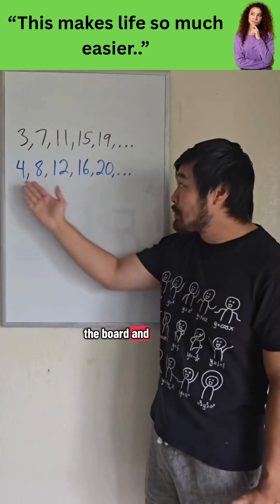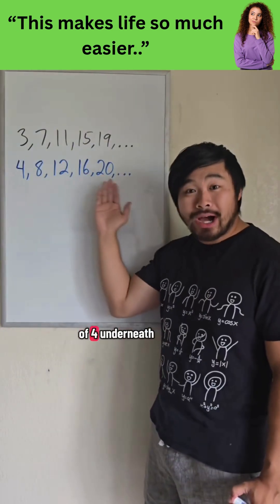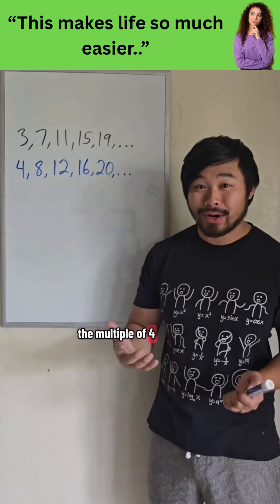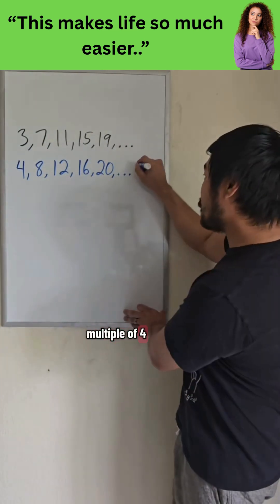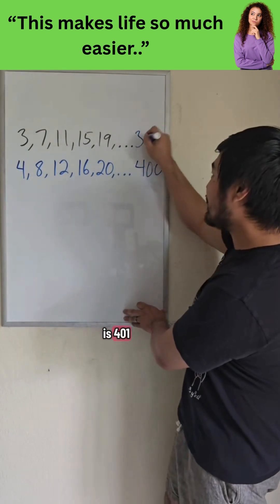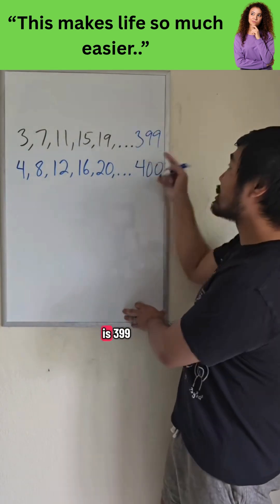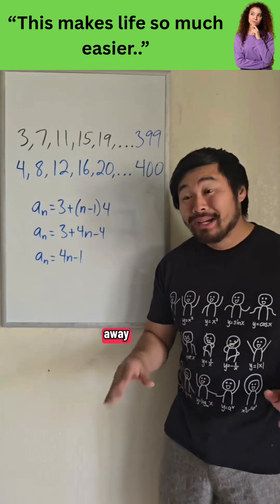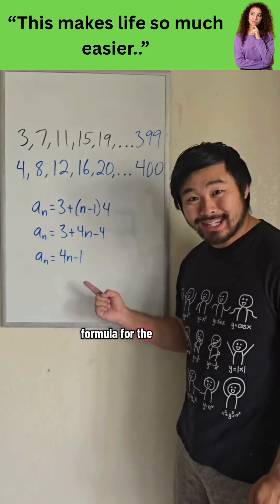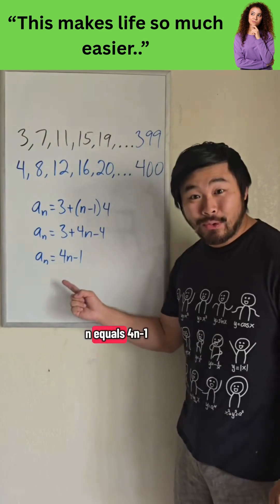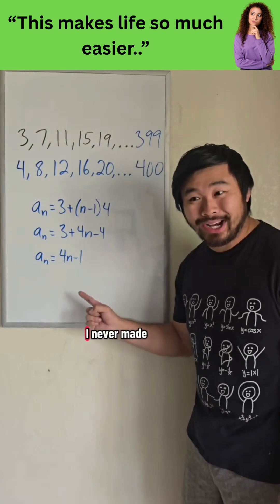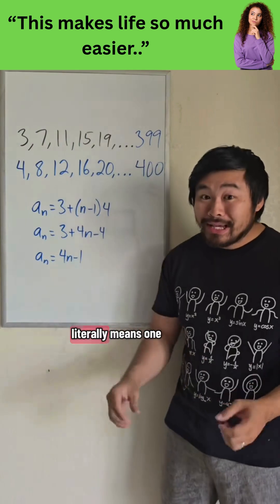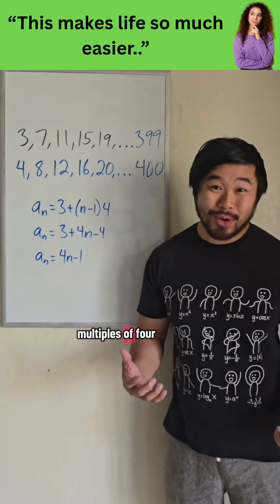The student went up to the board and wrote the multiples of 4 underneath. He said, I noticed that all of these are 1 less than the multiple of 4. And the 100th multiple of 4 is 400, and 1 less than that is 399. When he said that, I was blown away. Because the explicit formula for this sequence is a sub n equals 4n minus 1.